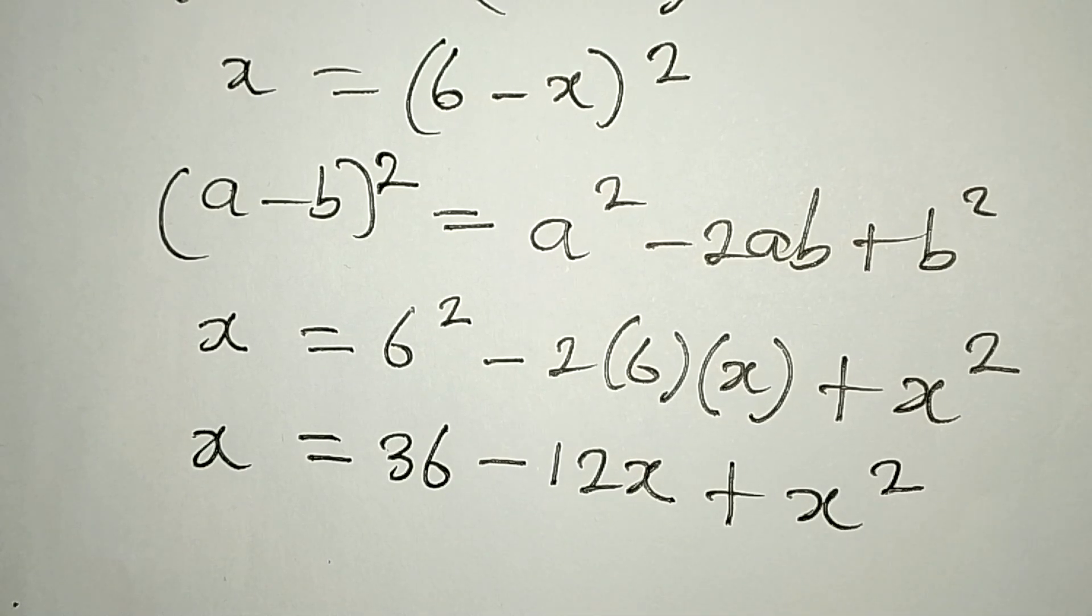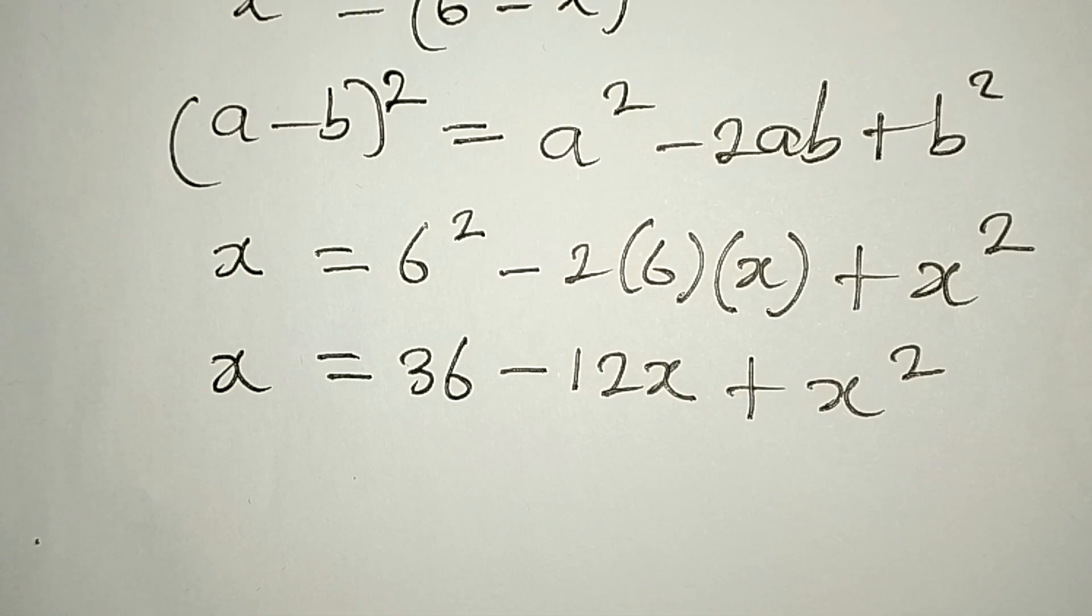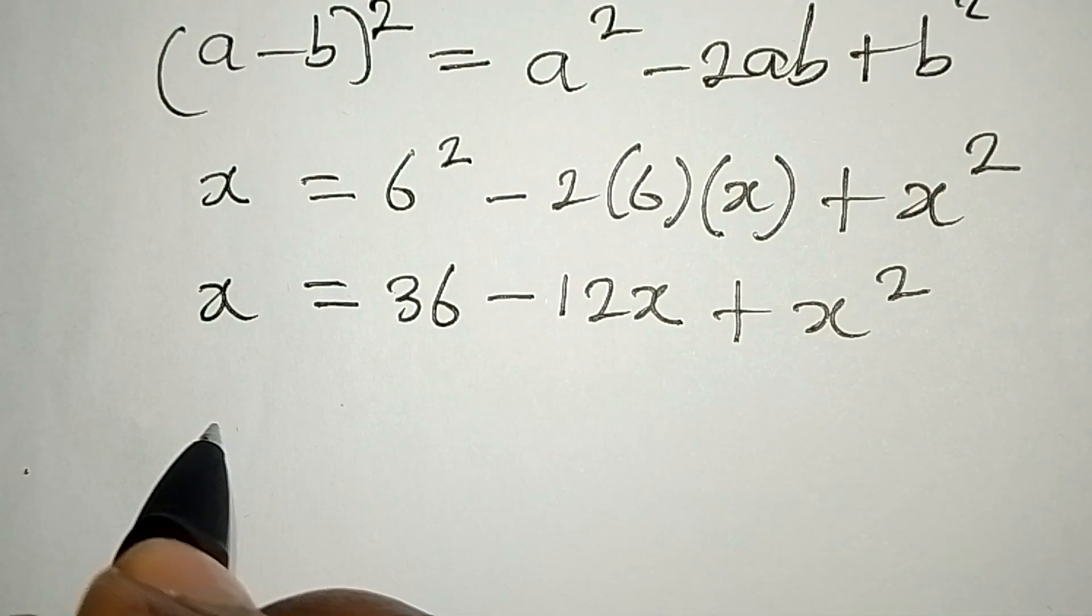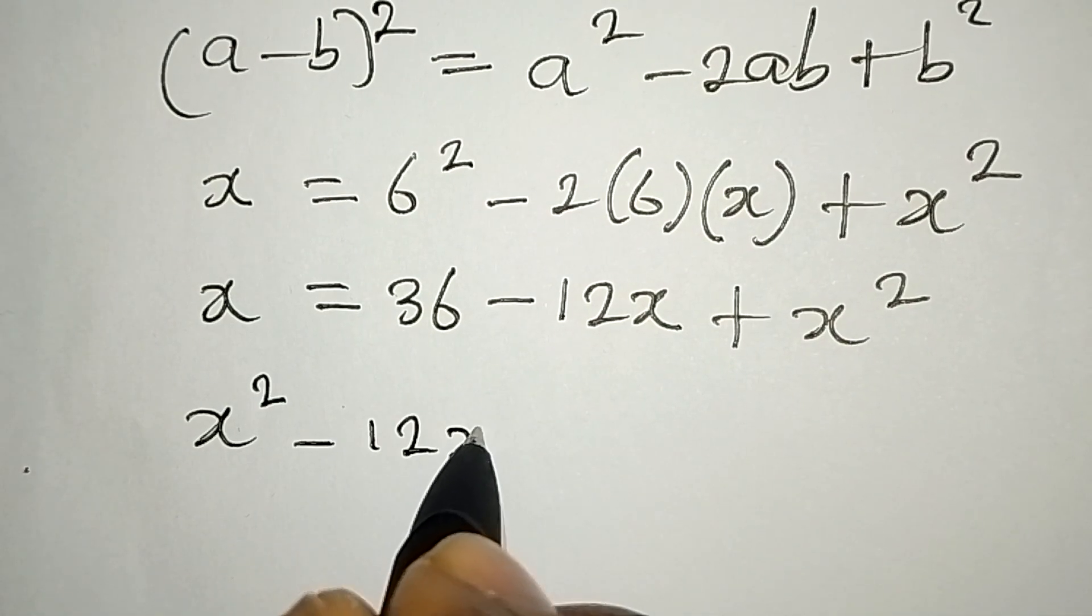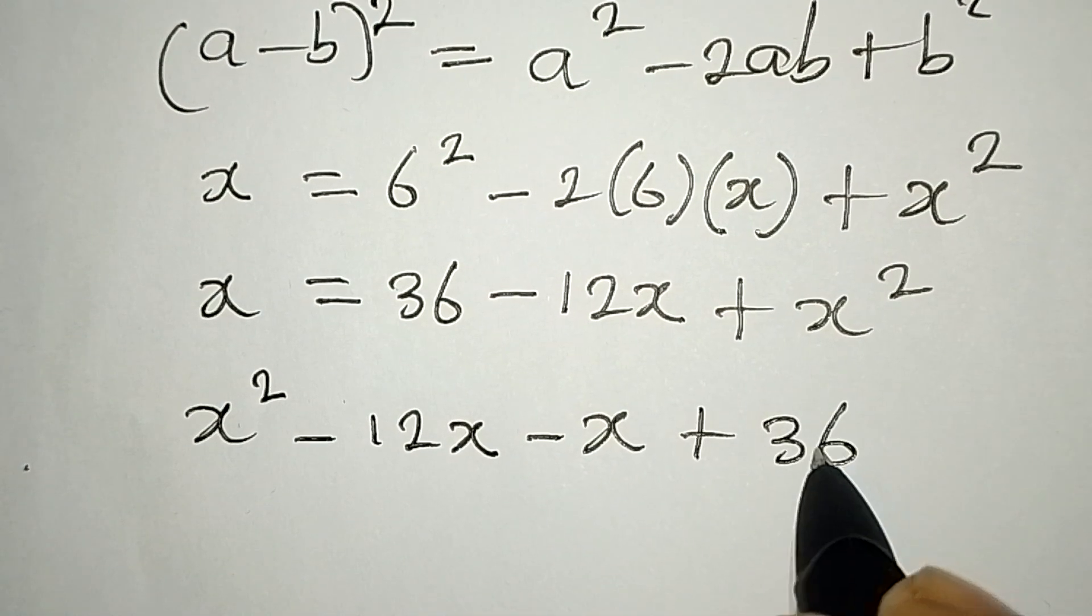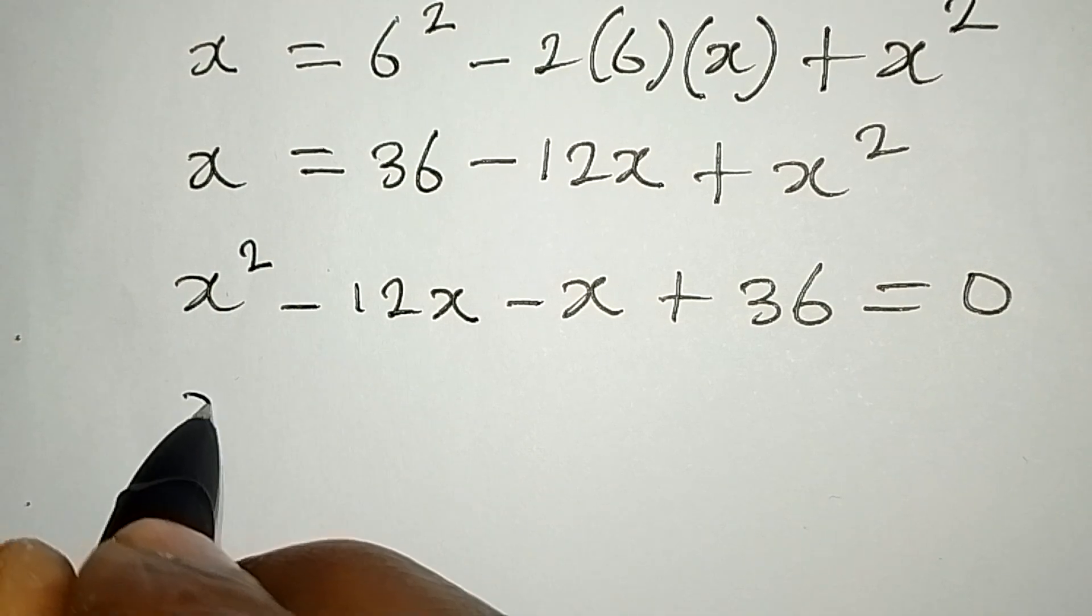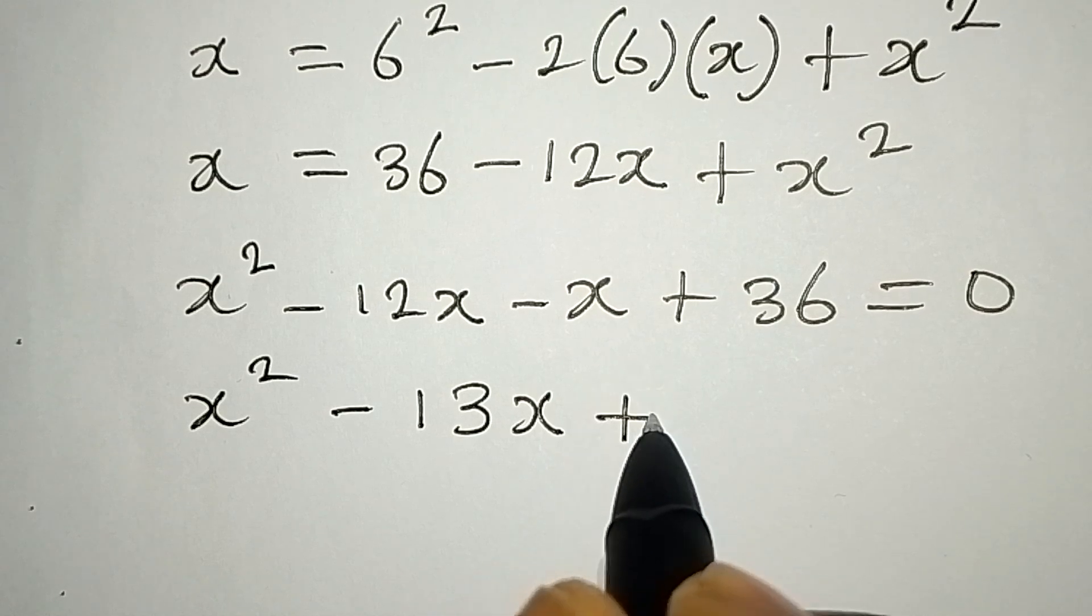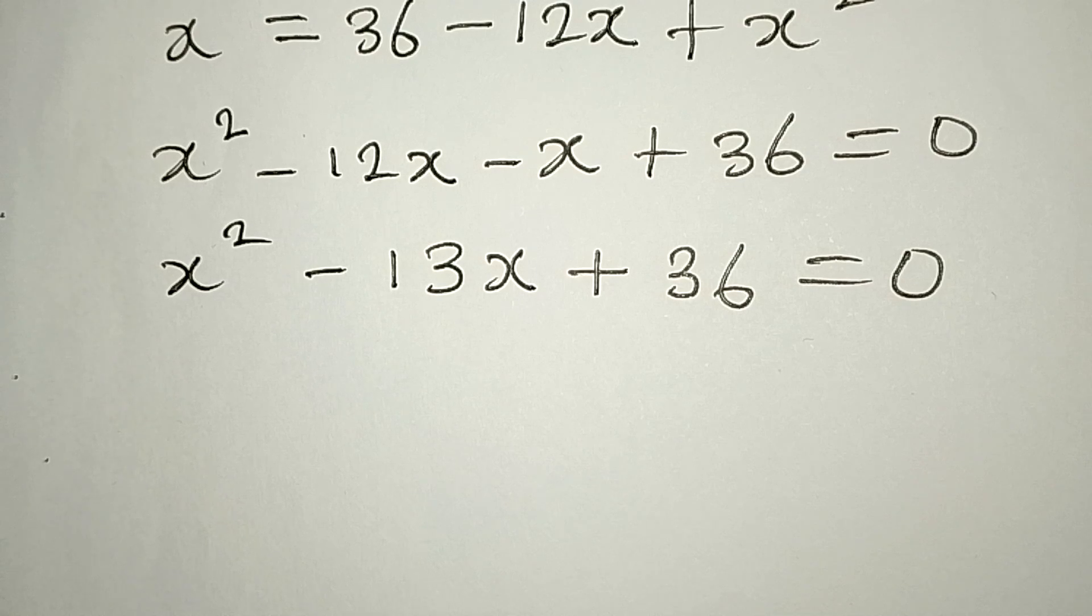Now we have a quadratic equation. Before solving, we have to rearrange this. x² will come first, then we have -12x which becomes -13x, then plus 36, and everything equals zero. So x² - 13x + 36 = 0.